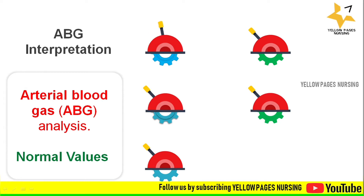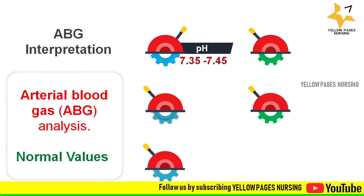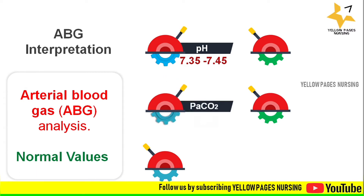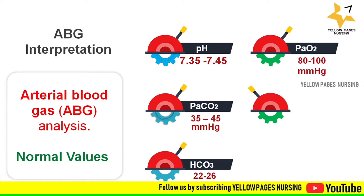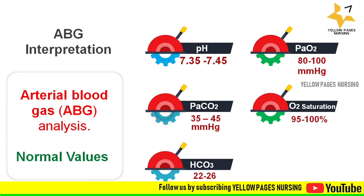To interpret ABG, we need to familiarize ourselves with some normal values. The first one is pH, with a normal range of 7.35 to 7.45. Next is the partial pressure of carbon dioxide, ranging between 35 to 45 mmHg. Next is bicarbonate, ranging between 22 to 26. Then partial pressure of oxygen, ranging between 80 to 100 mmHg, and finally oxygen saturation SpO2, ranging between 95 to 100 percent.